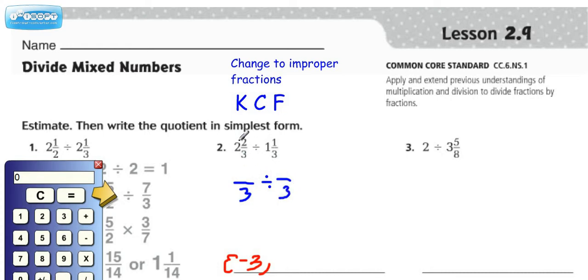Alright, to change this into an improper fraction, we have to multiply the denominator by the whole number, which would be 6, and then add in the numerator, which would be 8.